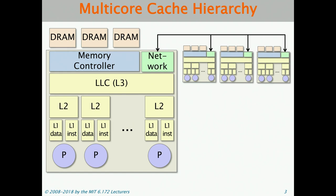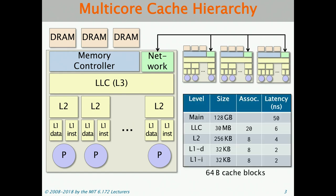There are different levels of memory here, and the sizes of each level differ. The sizes tend to go up as you move up the memory hierarchy. The L1 caches tend to be about 32 kilobytes — these are the specifications for the machines used in this class — 256 kilobytes for the L2 cache, which is about 8 to 10 times larger than L1. The last level cache is 30 megabytes, typically on the order of tens of megabytes. DRAM is on the order of gigabytes — here 128 gigabytes — and nowadays you can get machines with terabytes of DRAM.